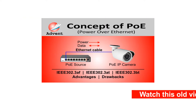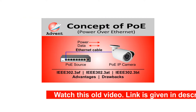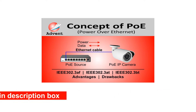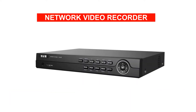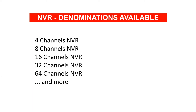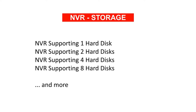Next is the Network Video Recorder, or NVR. Select the NVR based on the number of cameras you want to install. NVRs are available for 4, 8, 16, 32, or more cameras. Also check the number of hard disks it supports depending on your video storage requirements.